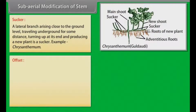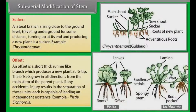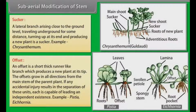An offset is a short, thick, runner-like branch which produces a new plant at its tip. The offsets grow in all directions from the main stem of the parent plant. If any accidental injury results in the separation of these units, each is capable of leading an independent existence. Examples: Pistia, Eichornia.